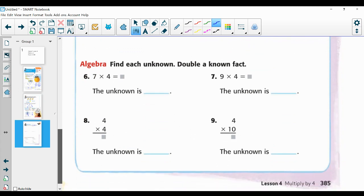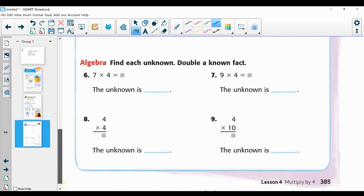You are going to find each unknown. You're going to double a known fact. So find your even number, decompose it into two of the same number, multiply each, multiply the other factor by each of those two numbers and find your unknown. You only need to fill in the blue blank. And that is your work for today and that is multiplying by four.